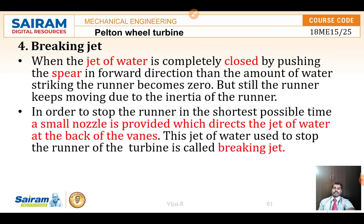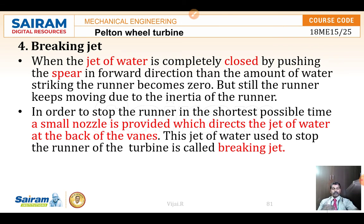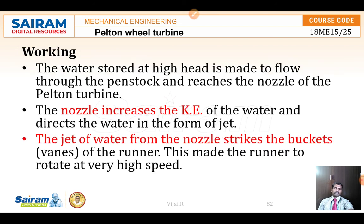The breaking jet is used on the opposite side when you want to stop the runner immediately. When the jet of water is completely closed, the runner will still continue rotating due to inertia. To stop it immediately, a breaking jet is applied at the back side of the vanes — in the opposite direction. While the front side hitting causes rotation, the back side breaking jet stops the runner immediately after the nozzle is shut off.